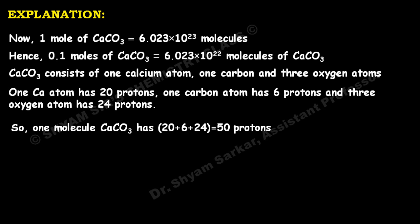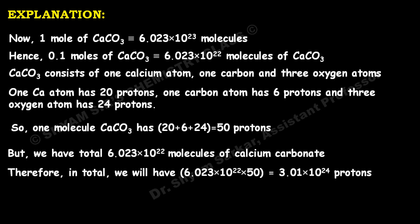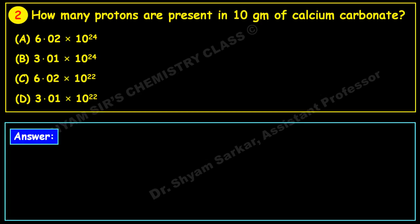We have 6.023 × 10²² molecules of calcium carbonate, and 50 protons per molecule. Total protons = 6.023 × 10²² × 50 = 3.01 × 10²⁴ protons. This matches option B, so option B is the correct answer.